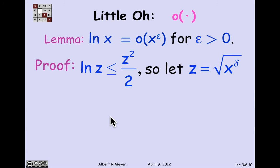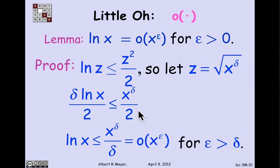So in that case, what's the log of z? Well, the log of the square root of x to the delta, the square root means it's half of log of x to the delta, which is delta log x. So log of z is delta log of x over 2. And of course, z squared is just x to the delta. So z squared over 2 is x to the delta over 2. Now, I can just cancel the denominators too. And I get that log of x and then transpose the delta. Log of x is less than or equal to x to the delta over delta. But delta, as long as delta is less than epsilon, x to the delta is going to be little o of x to the epsilon, which means that x to the delta times a constant, namely 1 over delta is also going to be little o of x to the epsilon. And I've just figured out that I've shown that log of x is little o of x to the epsilon, as required.